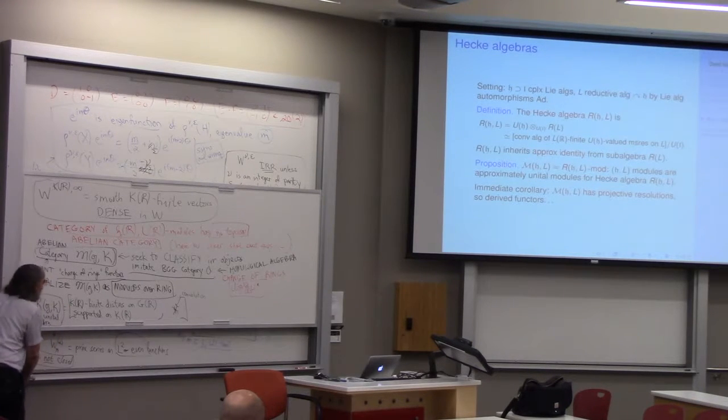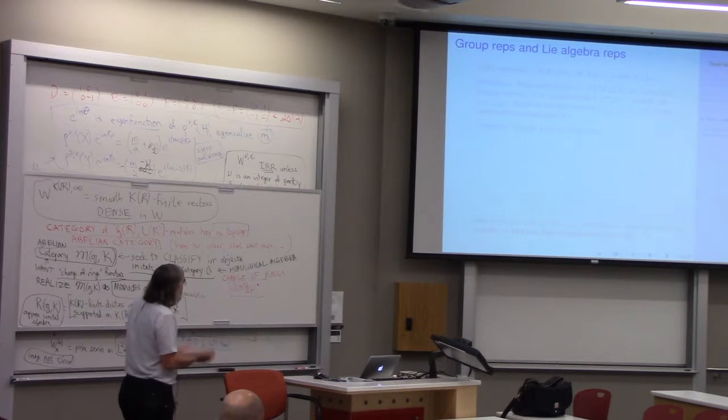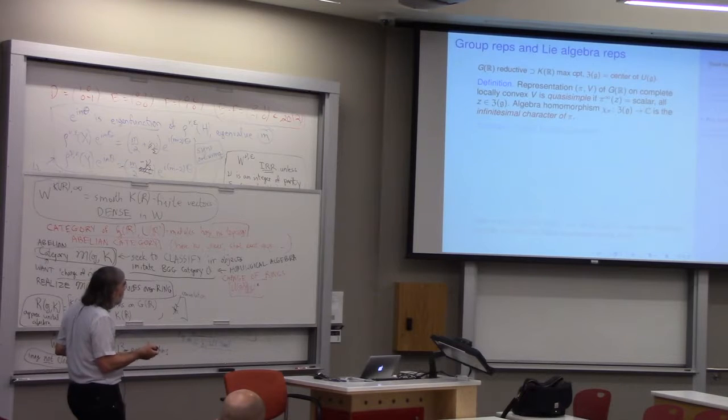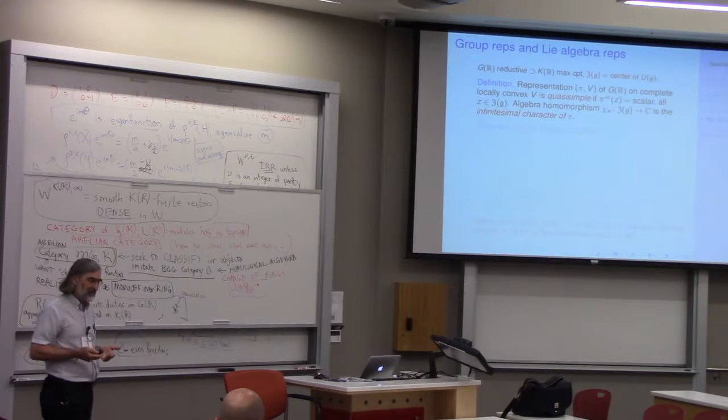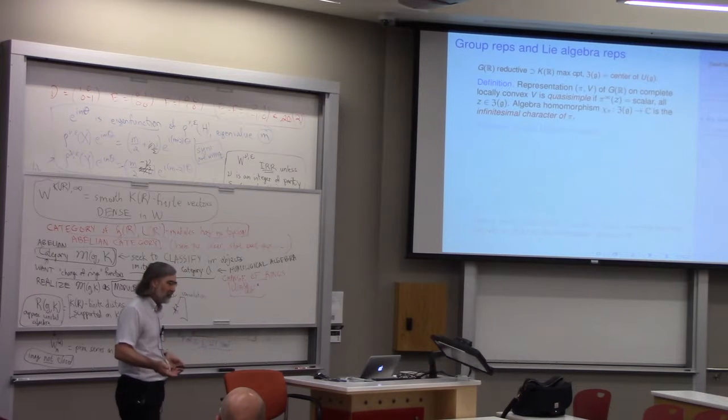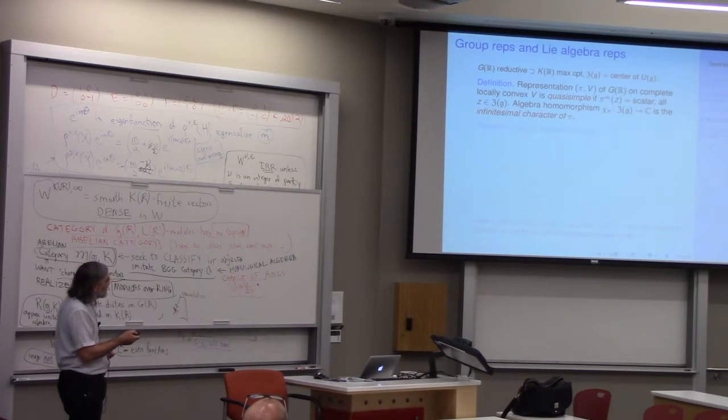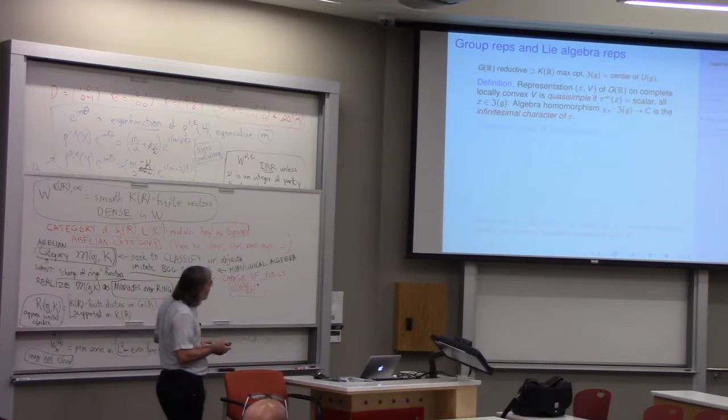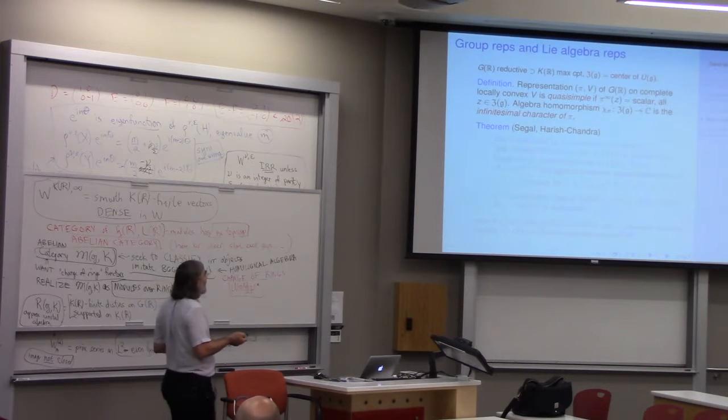So this is the setting in which you can... these are the rings that you want to change. So I'll just state Harish-Chandra's main theorem again. The big definition that Harish-Chandra makes is quasi-simple representations. In lots of accounts, people talk about admissible representations. Admissible means finite K multiplicities. But that's not a fundamental notion. The fundamental notion is quasi-simple, which is that the center of the enveloping algebra acts by scalars. So that's Harish-Chandra's good category of representations.